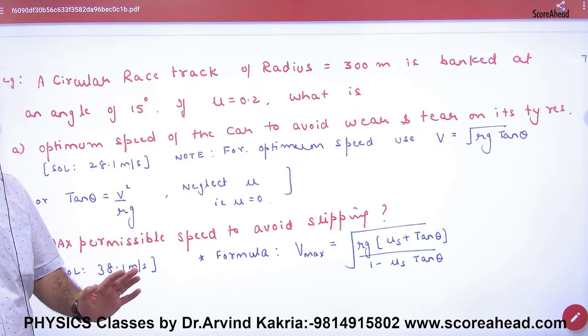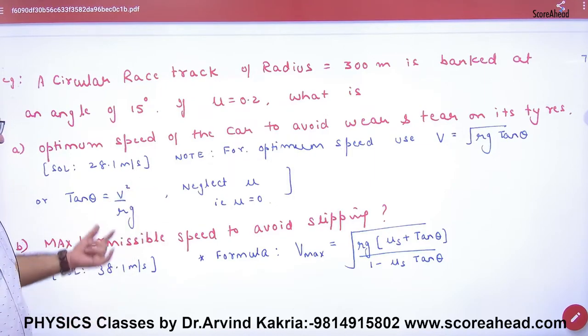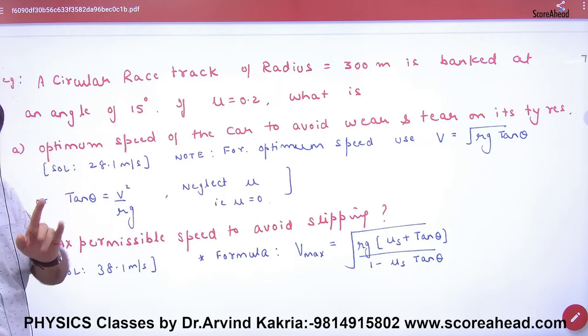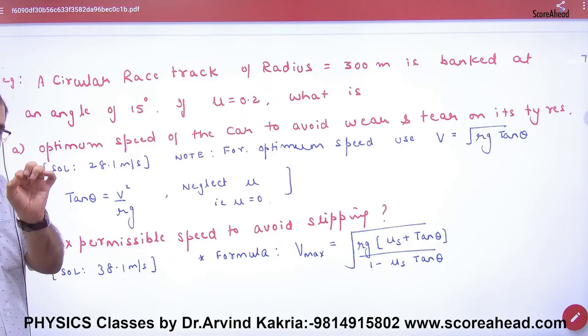Banking friction mu 0, mu 0 friction because without friction. Tan theta v square by Rg, answer will be, one formula use.